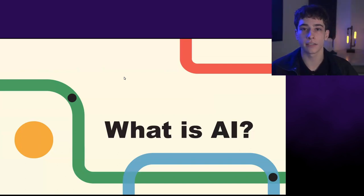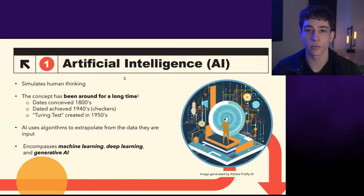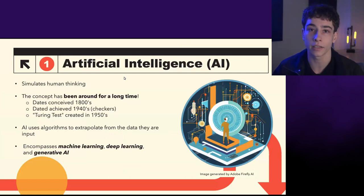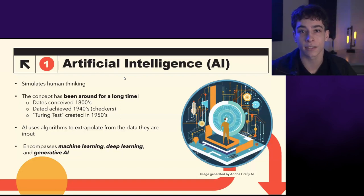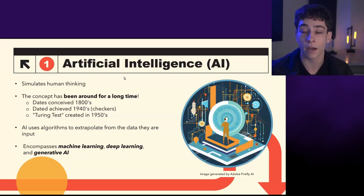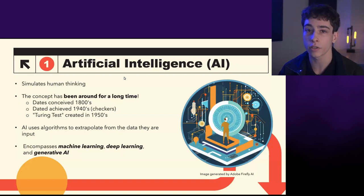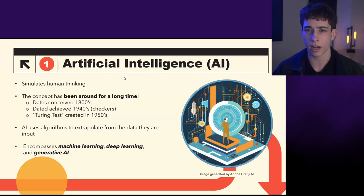We're going to start by defining what AI actually is. We've heard this term used a lot, especially recently. Artificial intelligence is a super generic term, and most of the time when you're hearing it, it's referring to generative AI. Artificial intelligence's main goal is to simulate human thinking. The idea was conceived in the early 1800s and first put into practice in the 1940s with a checkers test — it could determine outcomes, winners, losers, and odds. AI uses algorithms to extrapolate from data that's input, and this encompasses machine learning, deep learning, and generative AI. These algorithms are taking data from all over the internet, so the data sets they receive are quite large.